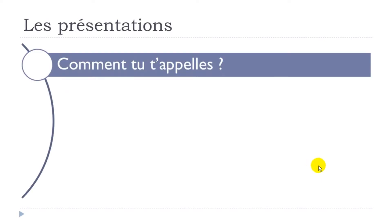In those first examples we've been using the vous form — the polite form — which we should normally use when meeting a person for the first time. But if you're young and meeting other young people, you can use the tu form, the less formal way.